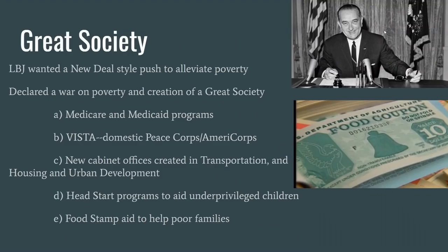President Lyndon Johnson was a deep admirer of Franklin Roosevelt and the New Deal. He felt a final push of New Deal-style progressive programs could alleviate poverty, which his Great Society program would declare war on. He passed major legislation including Medicare and Medicaid for health insurance for the poor and elderly, a domestic peace corps called AmeriCorps, new cabinet departments for transportation and housing and urban development, Head Start programs for underprivileged children, and a food stamp program. While these programs still exist and have expanded today, they have fallen short of their goal of alleviating poverty.